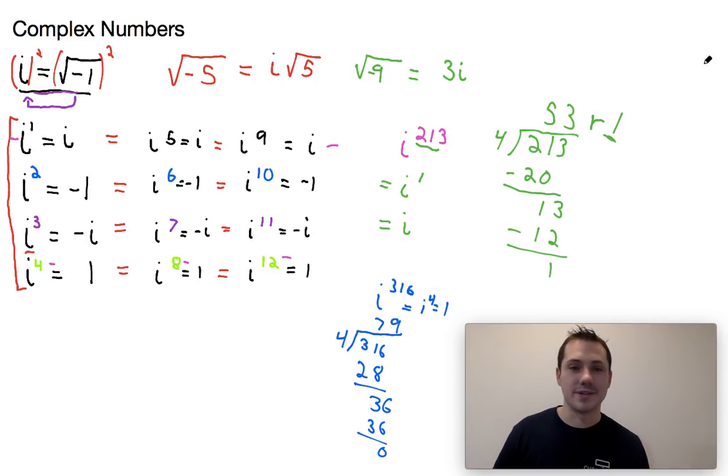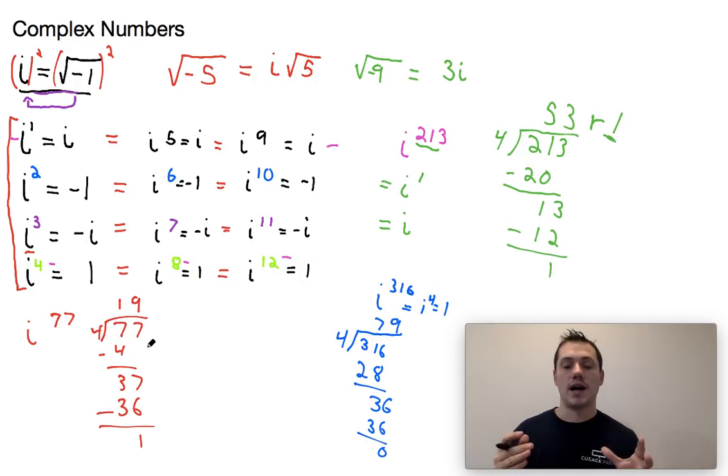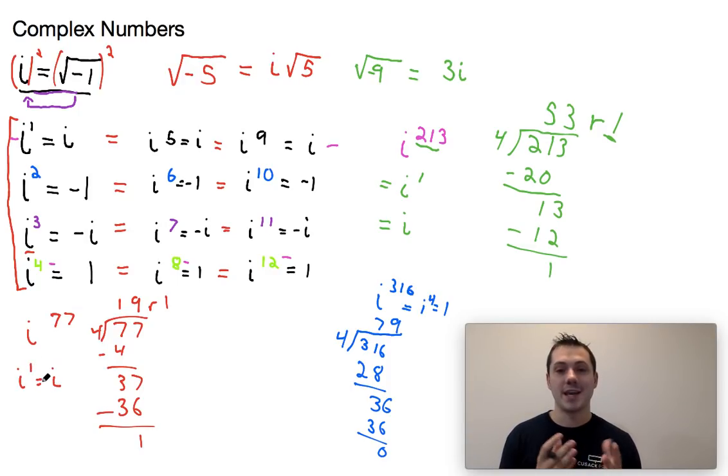Finally, we'll do just one last example of this type. Let's say we had i to the, I don't know, 77. So we could do 77 divided by four. Four goes into seven one time. Four times one is four. Subtract three, bring down the seven. Four goes into 37 nine times. Four times nine, 36. One, four goes into one. Can't go into one, so that means that's the remainder. And same thing. If the remainder is one, this means i to the 77th is just the same as i to the first, which is just equal to i.